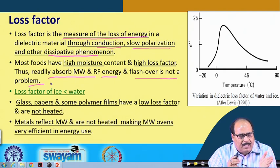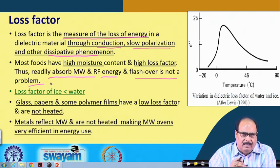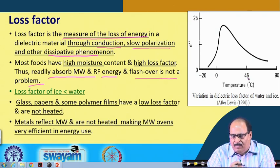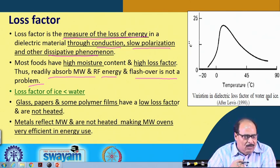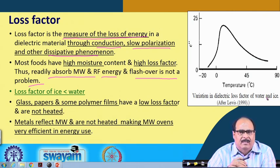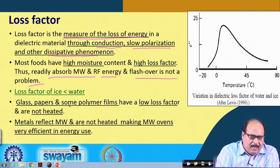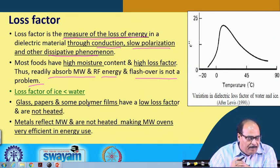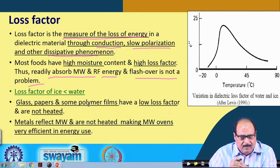As seen earlier, the loss factor of ice is less than that of water; water has more loss factor, which can also be seen in the figure showing variation in dielectric loss factor of water and ice. Water has more loss factor than ice, so water can be heated more easily. Glass, paper, and some polymeric films have a low loss factor, meaning they are not heated. Metals reflect microwaves and are not heated, making microwave ovens very efficient in energy use.